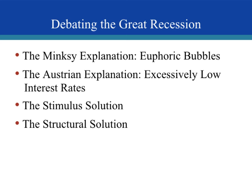Economists have debated the cause of the Great Recession. The Minsky explanation is that euphoric bubbles happen — people over-invest, buying assets expecting them to only go up, until they become overvalued and drop. The Austrian explanation holds that excessively low interest rates led to excessive borrowing. The stimulus solution says government should pump money into the economy to increase aggregate demand and get businesses back on their feet. Other economists favor the structural solution: let inefficient firms go bankrupt so those resources flow to more efficient firms, increasing productivity and helping the economy recover. This wraps up chapter 24.